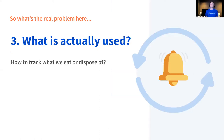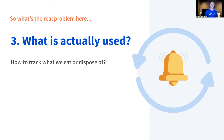I need to know what's actually used. If I'm just tracking what I'm acquiring and don't track what I use, we won't know what I actually have available. So we need to track what I either eat, dispose of, donate, or cook.